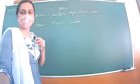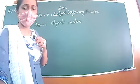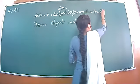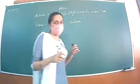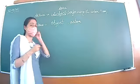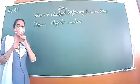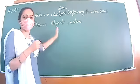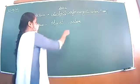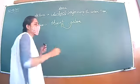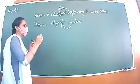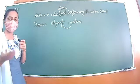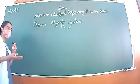In active voice, the subject is important — the doer is important, the one who performs. In passive voice, the object is important. Our focus and attention is on the object, the person or the thing who receives the action, who is affected by the action. So in passive voice, the focus is on the receiver — the person or thing affected by the action.